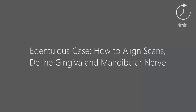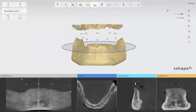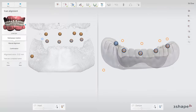In this video you will learn how to align scans, define gingiva and the mandibular nerve with 3-shape Implant Studio. Once the panoramic curve has been set, you can proceed to the scan alignment step.